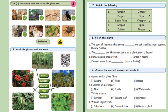Fill in the blanks. The part of the plant that grows above the soil is called shoot system. The leaves are the green parts of a plant. Plates can be made from areca. Flowers grow from buds. Choose the correct answer and circle it. A plant which gives fiber is banana. Example of a creeper is watermelon. This is a spice: bay leaf. Winnow is from the bamboo plant.